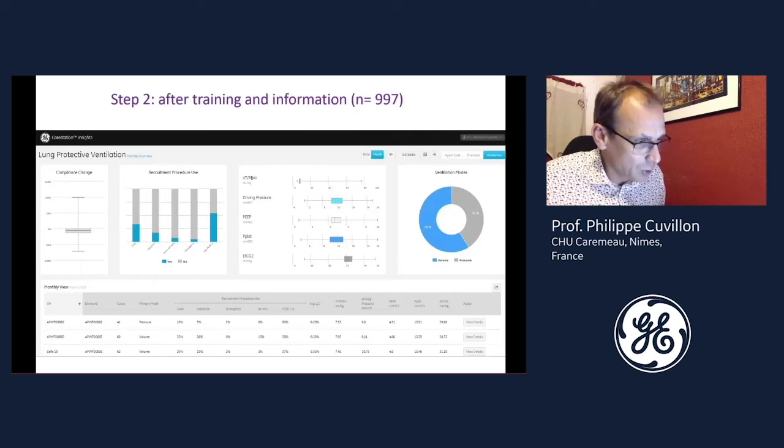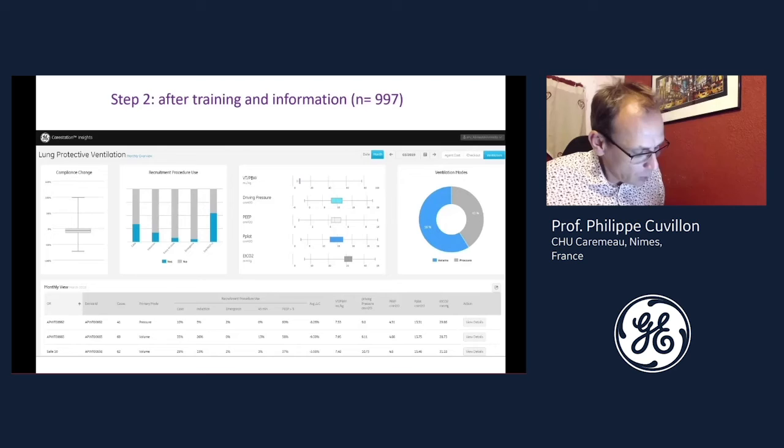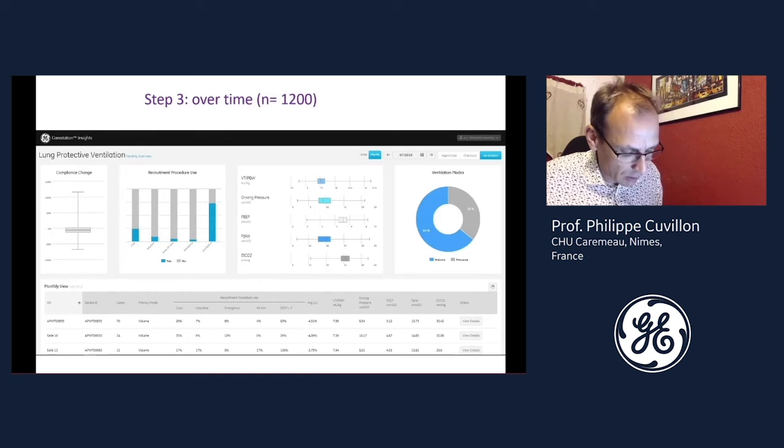For step two, information to the clinicians and nurses and training were performed over one month and continued, and data were simultaneously recorded. After step two, we stopped giving information and returned to real life for three months, and we collected one thousand patients over this period. We observed that all settings were worse. We then decided to automatically transmit information during anesthesia to the anesthesiologist to make them think about good practices and protective ventilation.